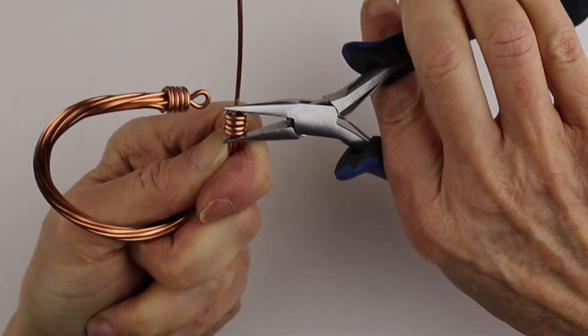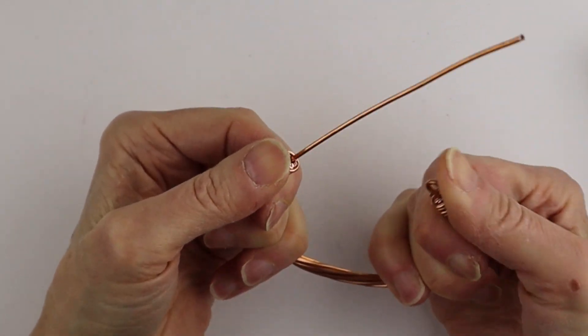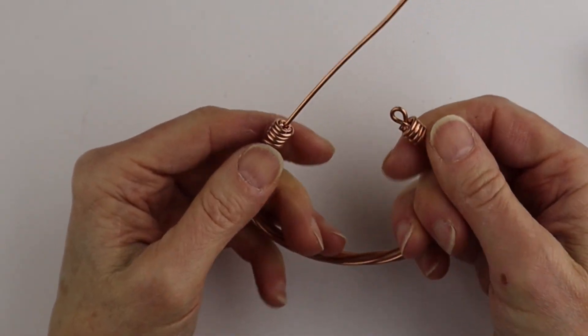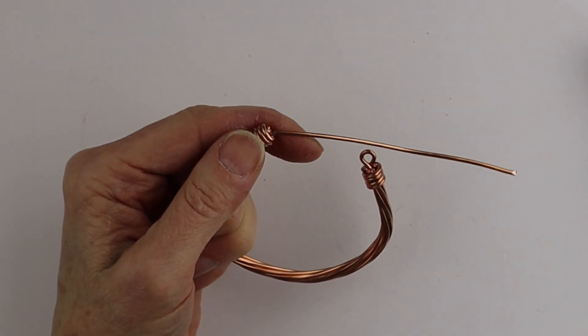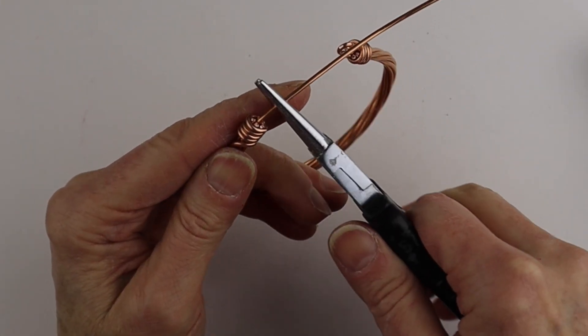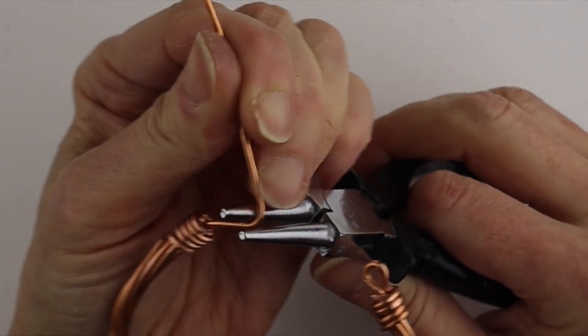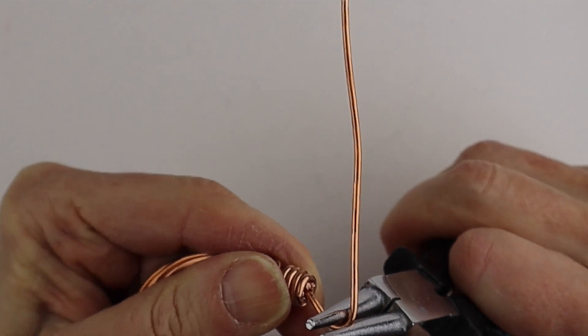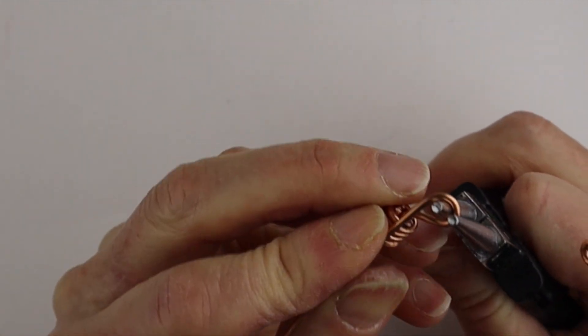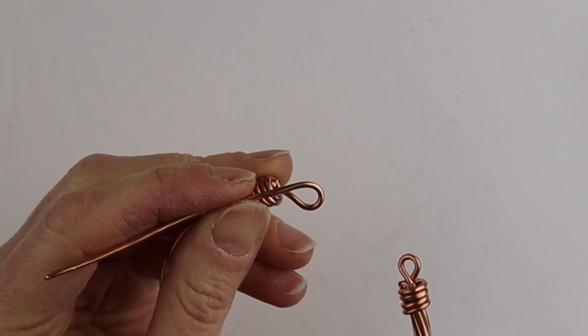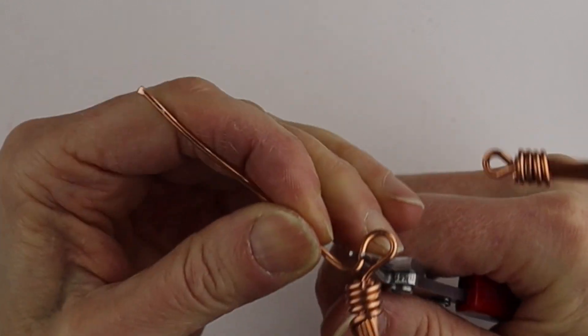This end we can do like a little hook thing, so just keep it super simple. We're going to take our larger round pliers and just take this and bring it back, bring it around like that. Not too big, we don't want it too big, so around there.